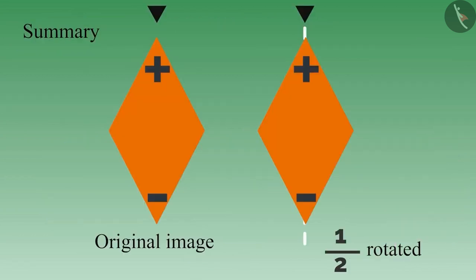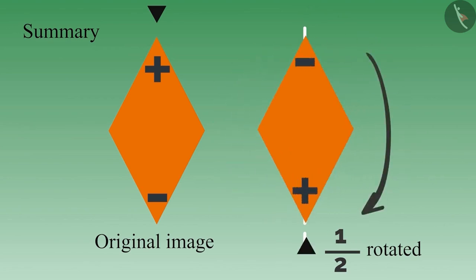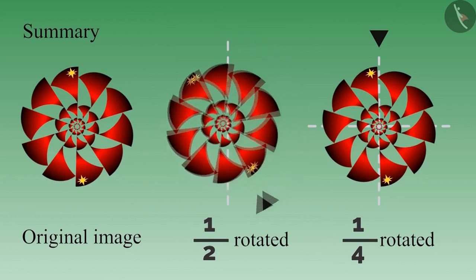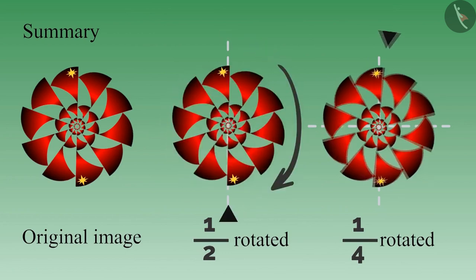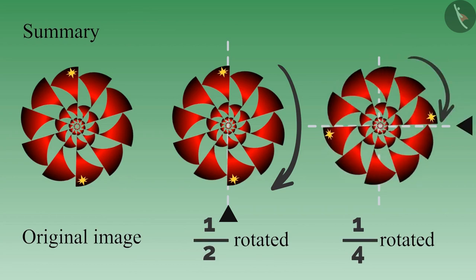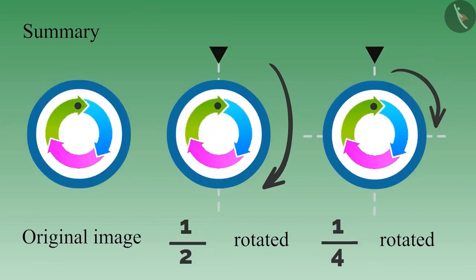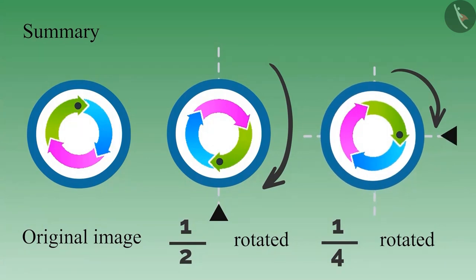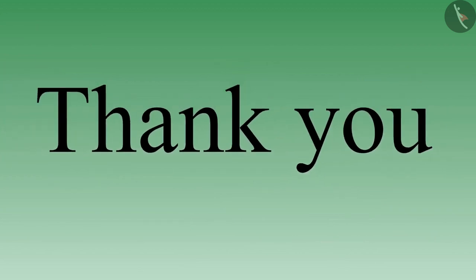In this video, we learned that we should pay attention to even the small symbols marked on the image when rotating by half or one-fourth. It is not necessary that if an image looks like the original when turned by half, it will look like the original when turned by one-fourth. You also learned that it is not at all necessary that we get the original image by turning the image by half or one-fourth. Hope you will take care of the important things mentioned in this video. Thank you.